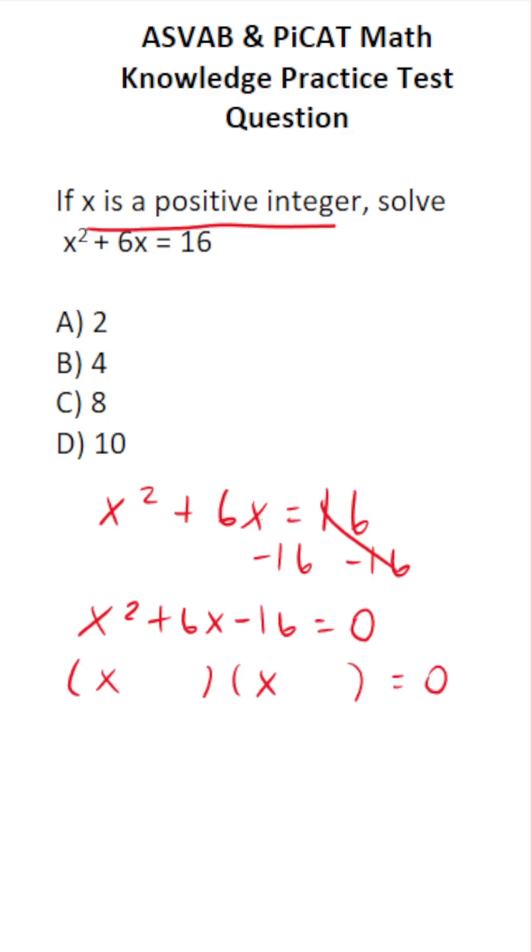Now we can solve for x. We're looking for two numbers that multiply to negative 16, but add to positive 6. That's going to be negative 2 and positive 8. Again, negative 2 times positive 8 is negative 16. 8 minus 2 is 6.